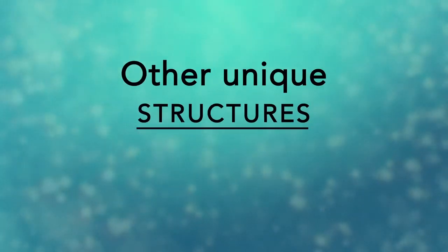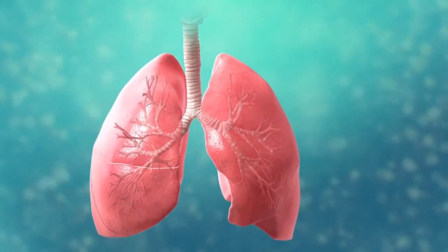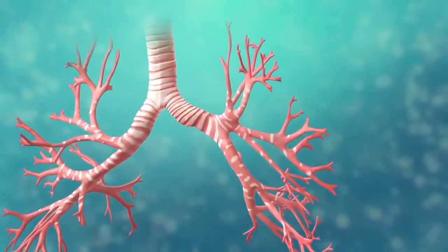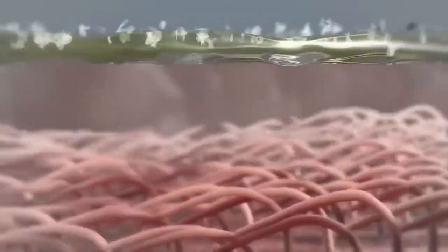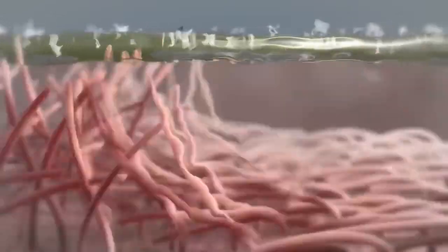There are many other unique structures that only some cells have. Here are just a few. In humans, for example, the respiratory tract is lined with cells that have cilia. These are microscopic hair-like projections that can move in waves. This feature helps trap inhaled particles in the air and expels them when you cough.